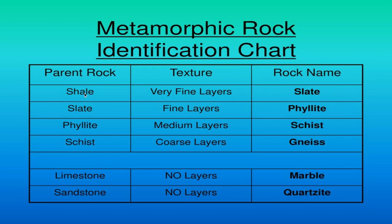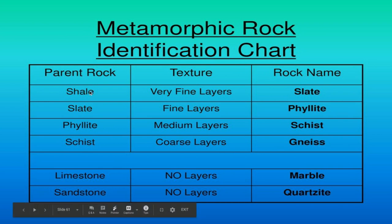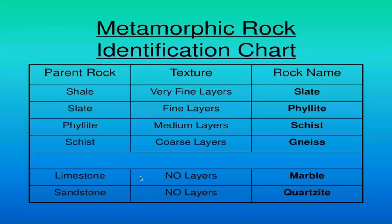So shale can be kind of like the grandparent rock of phyllite. Phyllite can become, under heat and pressure, a rock called schist, and schist can become another metamorphic rock called gneiss. So we have sedimentary to metamorphic, and then three different metamorphics becoming new and different metamorphic rock.